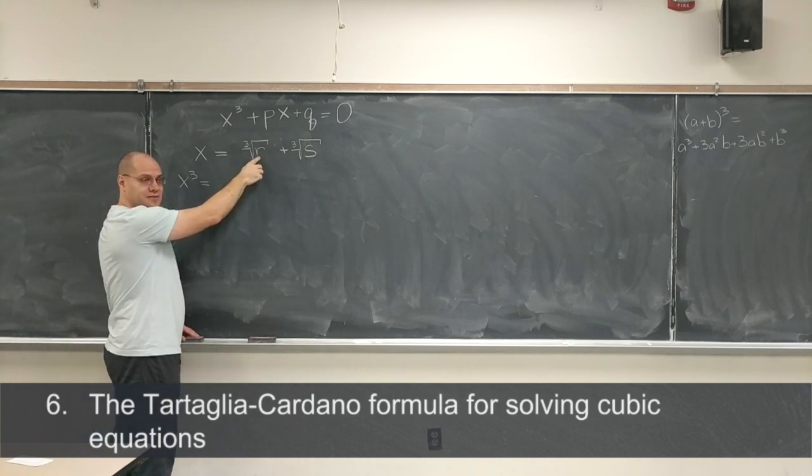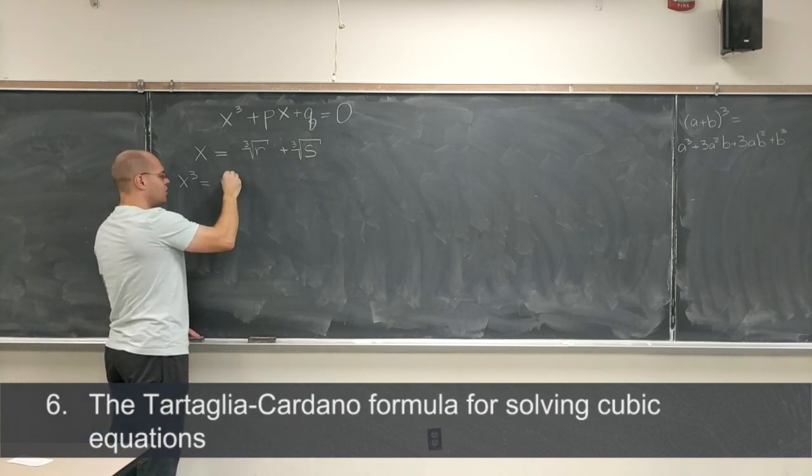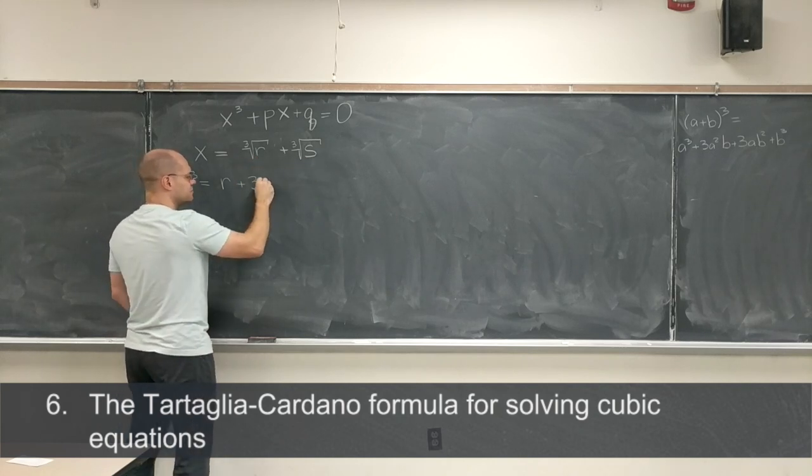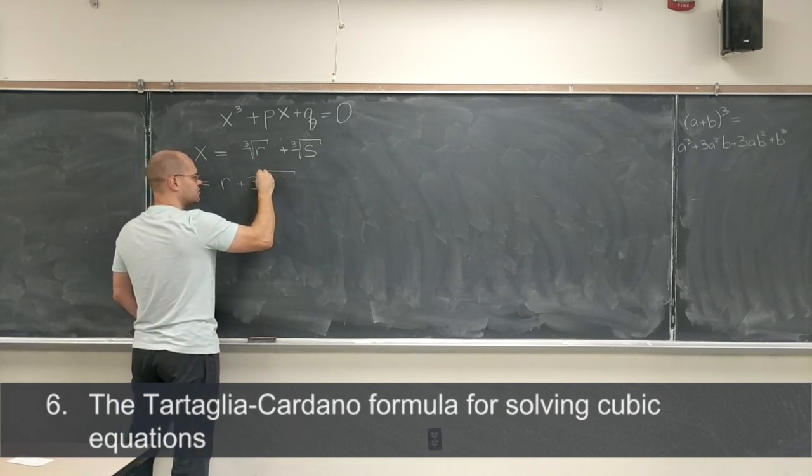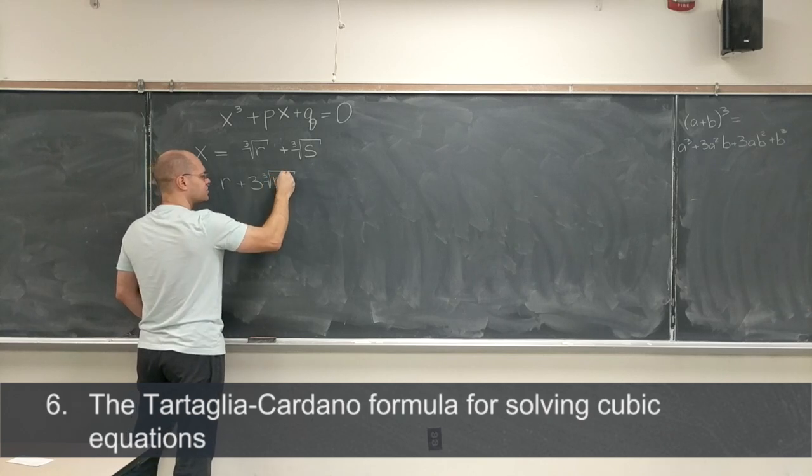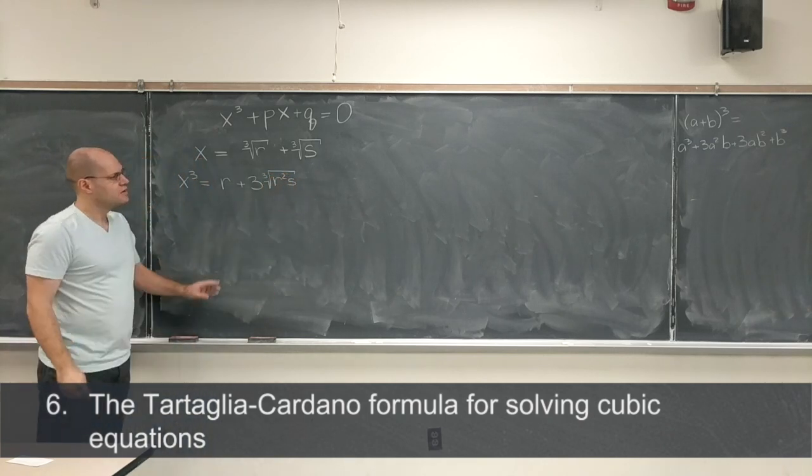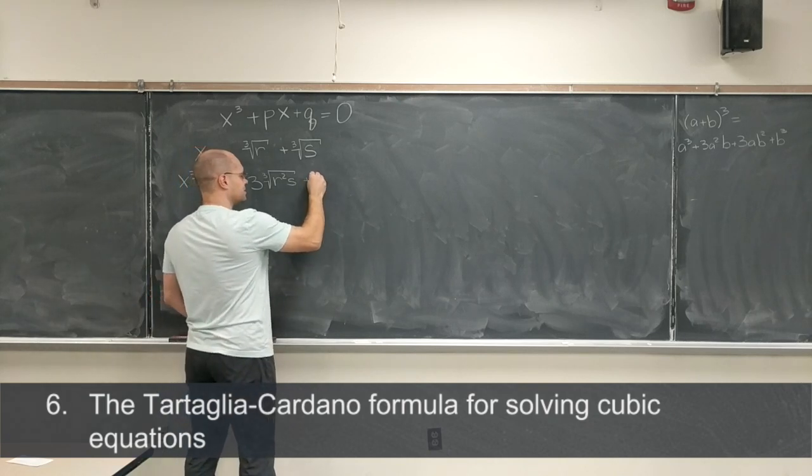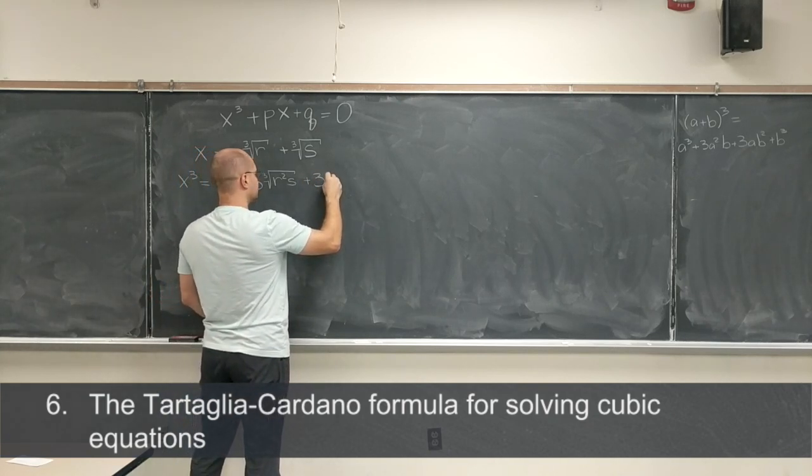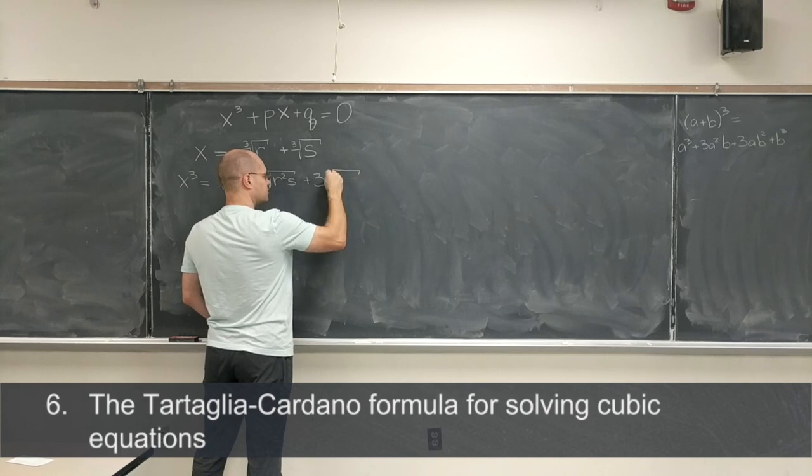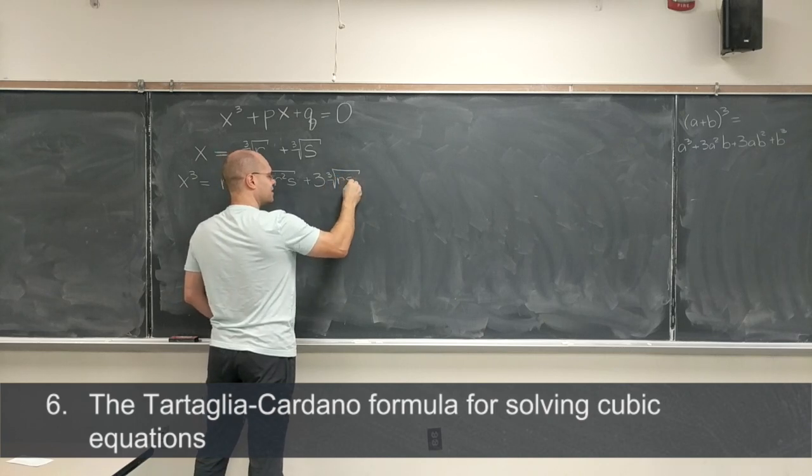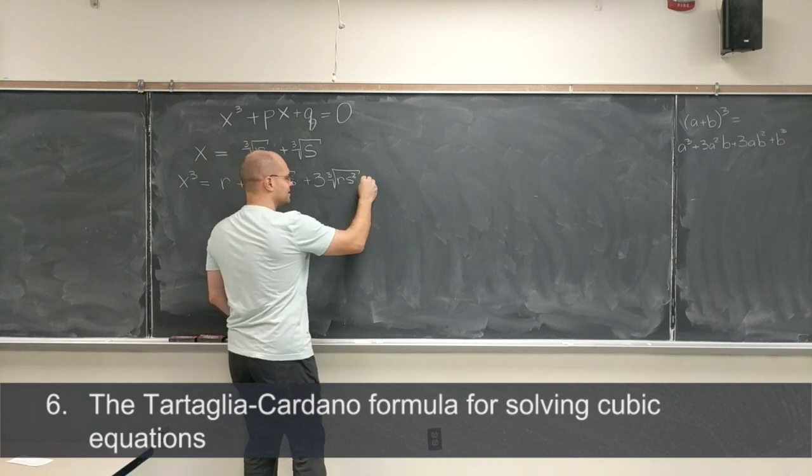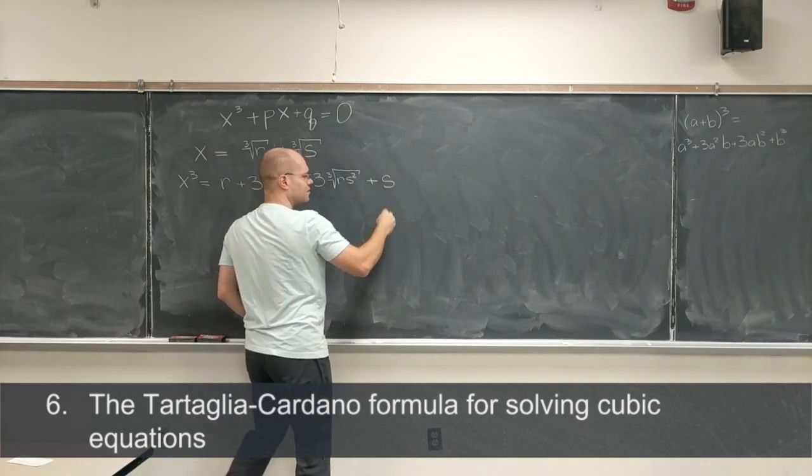So x cube equals, well r, because it's this cube, r, plus 3 times this square and this, so it's cubic root of r squared s, plus 3 times this times this square, so it's plus 3 times cubic root, the cubic root of r s squared, plus this cube, so plus s. Okay, great.